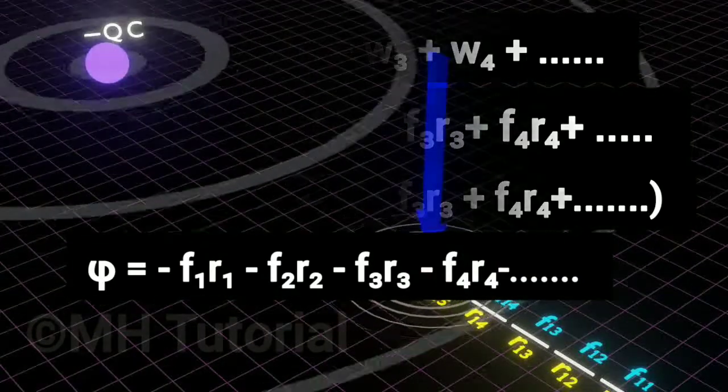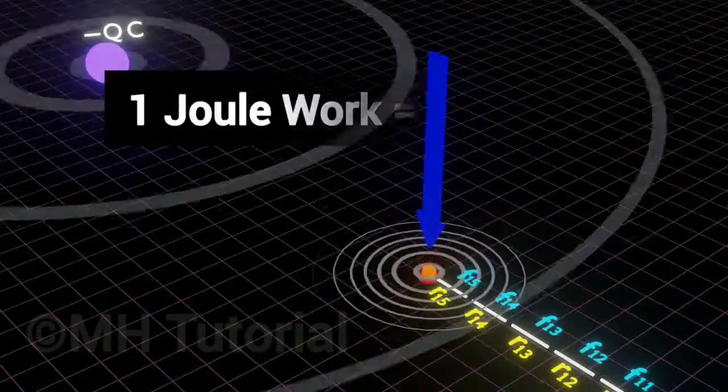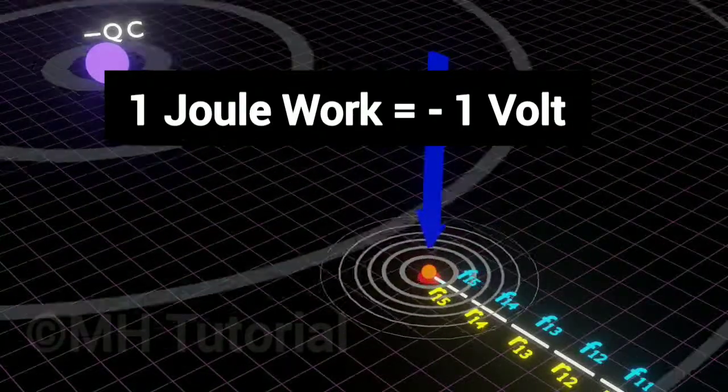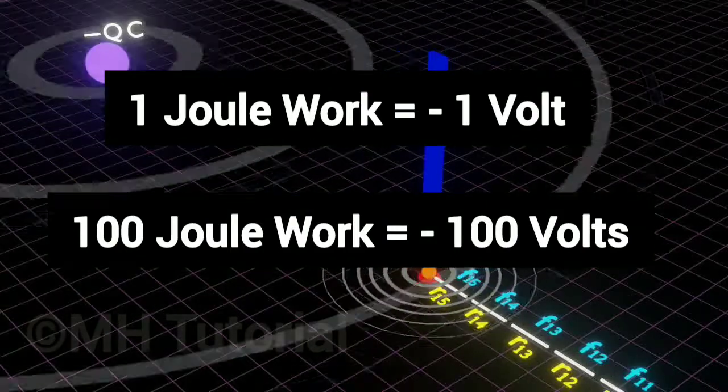Note that in this second occasion, the electrical potential is negative. If the work done by the system is 1 joule, then potential is minus 1 volt. If the system carries out 100 joules of mechanical work, then the potential is minus 100 volts.